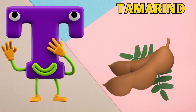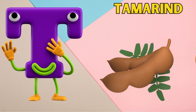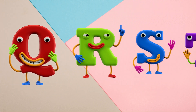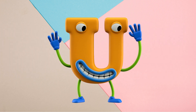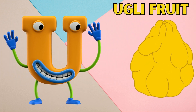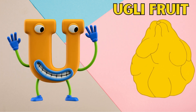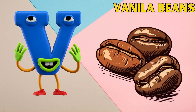T is for tamarind, t-t-t-tamarind. U is for ugly fruit, uh-uh-ugly fruit.